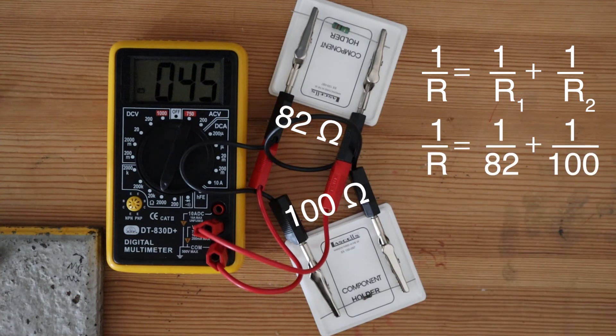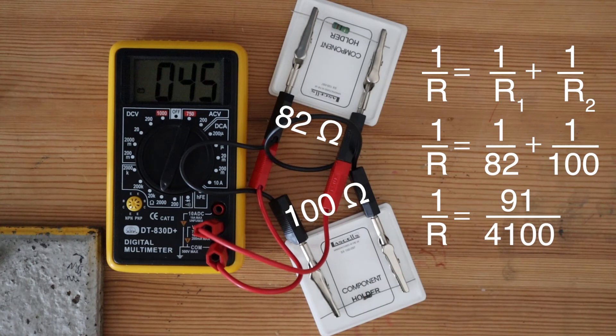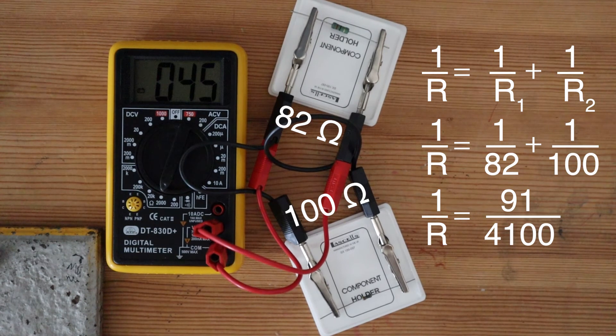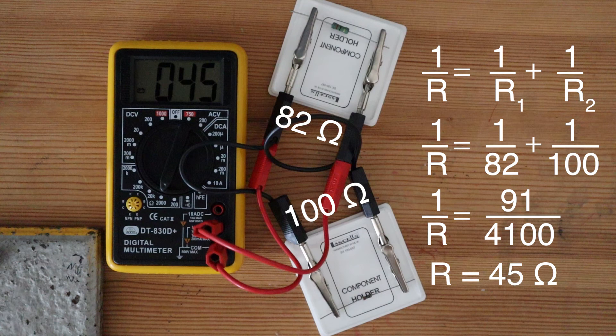For this circuit, 1 over R is equal to 1 over 82 plus 1 over 100. So 1 over R is equal to this fraction. In order to find R, I must flip this fraction by doing 1 divided by the fraction. This gives me R, which means that when these two resistors are connected in parallel, their total resistance is 45 ohms.